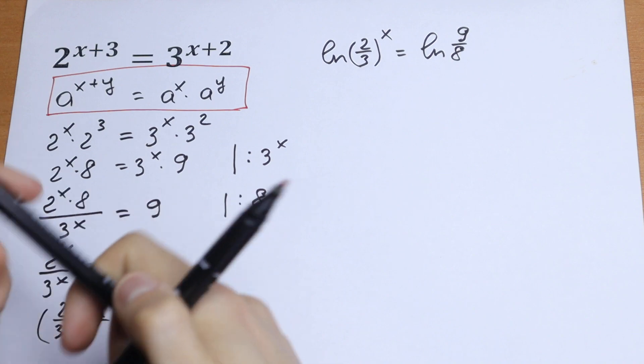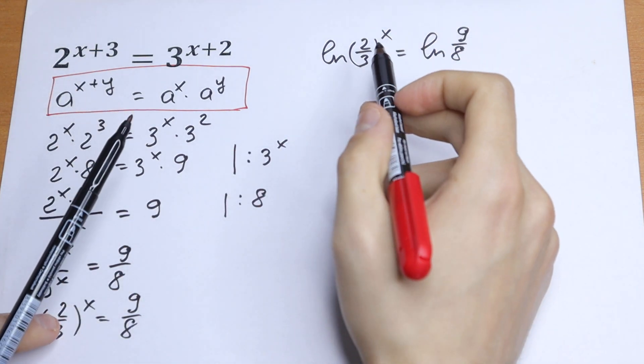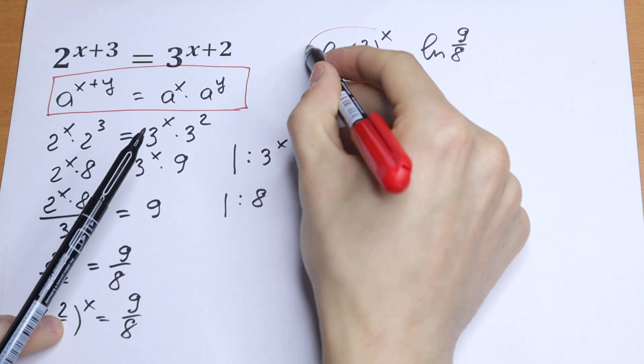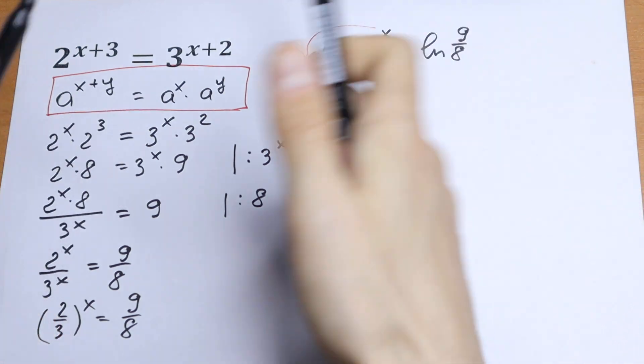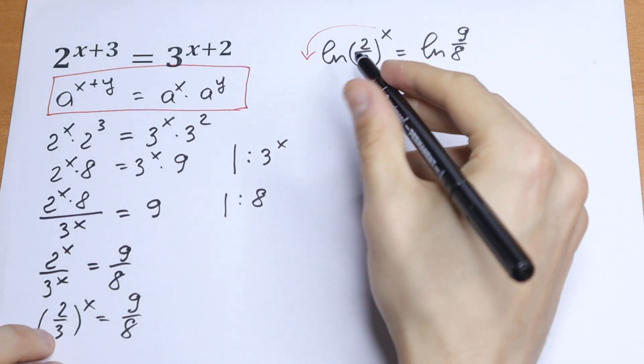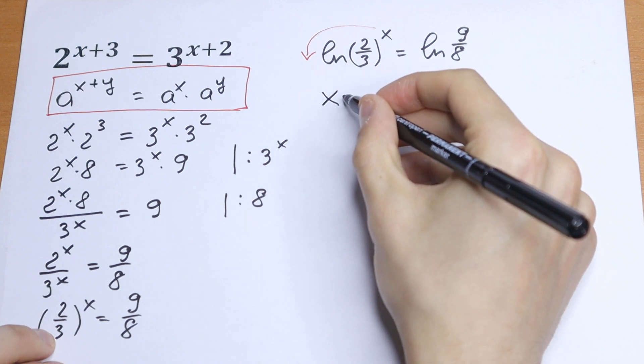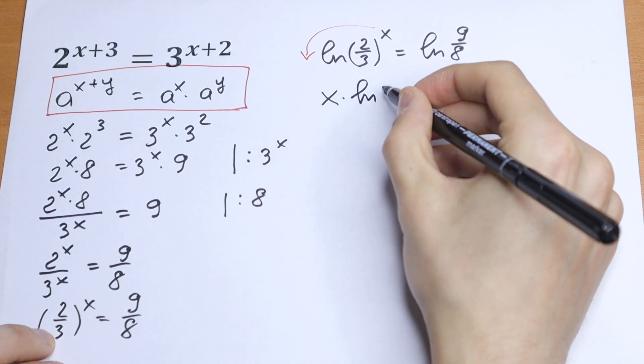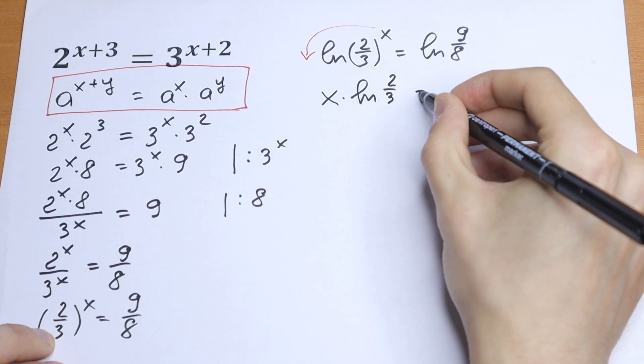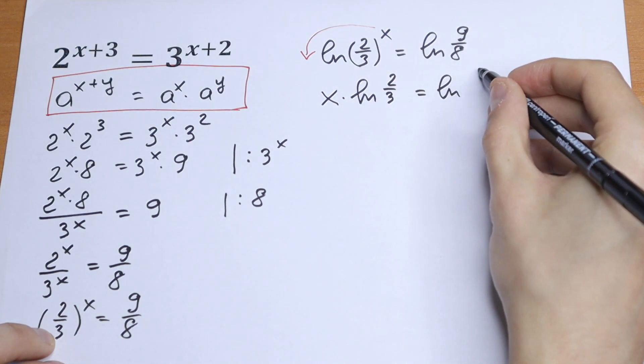If we have x in the exponent, this x jumps to the beginning. We will have x times natural log 2 over 3 equal to natural log 9 over 8.